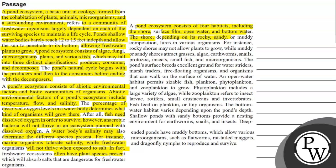The shore, depending upon its rocky, sandy and muddy composition, harbors various organisms. For instance, rocky shores may not allow plants to grow, while muddy or sandy shores attract grasses, algae, earthworms, snails, protozoa, insects, small fish and microorganisms.